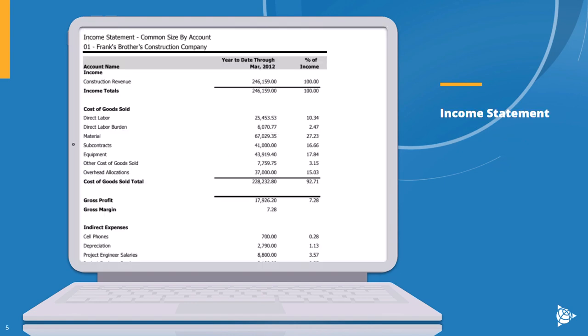If you want to know whether you've made money, you'll want to look at an income statement. The income statement shows how much money a company has earned and spent over a specific period, usually a year, a month, or a quarter. It's like a report card for the company's financial performance — a record of all the money that came in and went out during a certain time period.